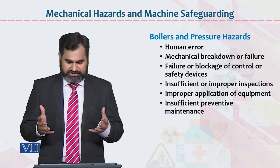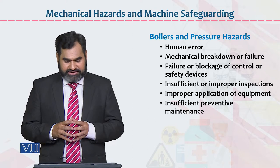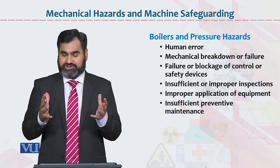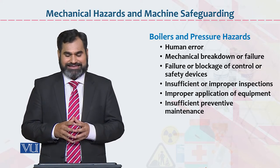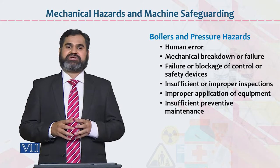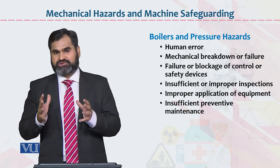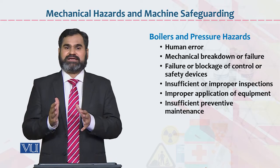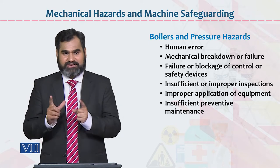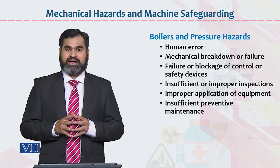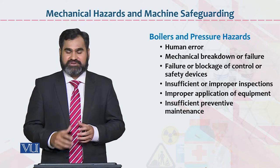Human mistakes, mechanical breakdown or failure, failure or blockage of controls, insufficient or improper inspection, improper application of equipment, insufficient preventive maintenance — yeh tamam technical mistakes hain jo ke man-made hain. Basically insaan ki taraf se yeh mistakes ho sakti hain, aur jab yeh mistakes hongi toh automatically boiler ke andar kisi kisam ki technical fault paida ho jaegi. Us wajah se human incidents hone ka, ya human loss hone ka, ya sometime human injury hone ke chances bahut zyada hote hain.